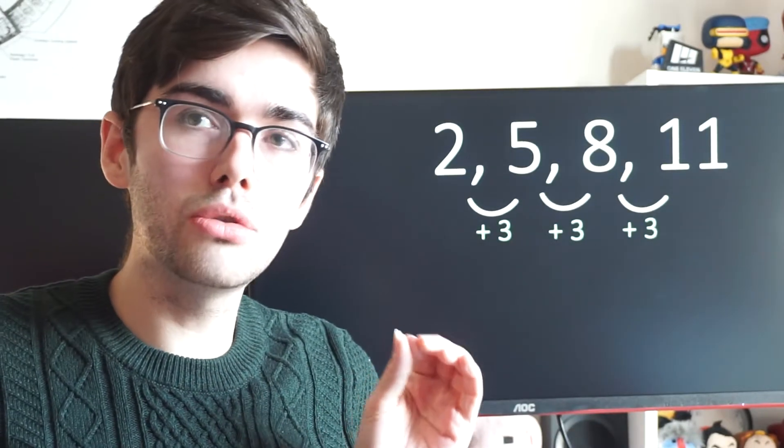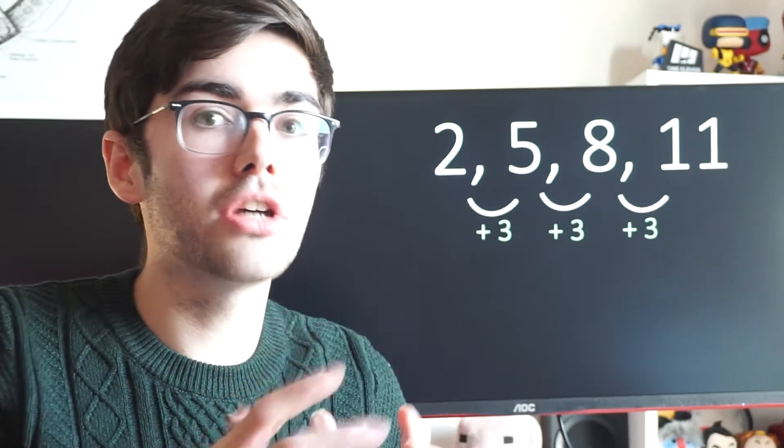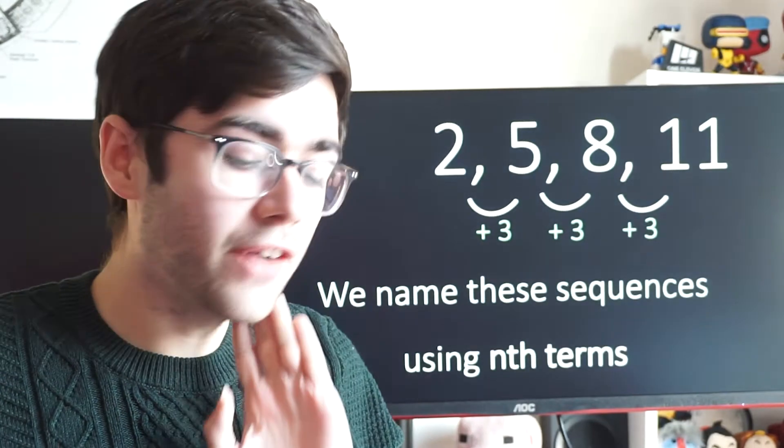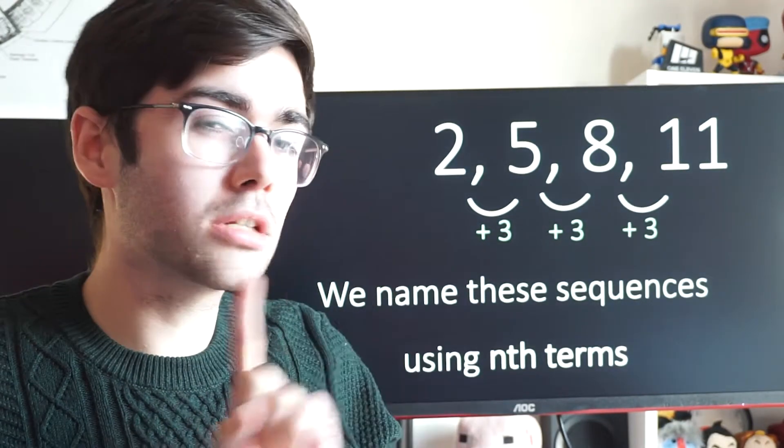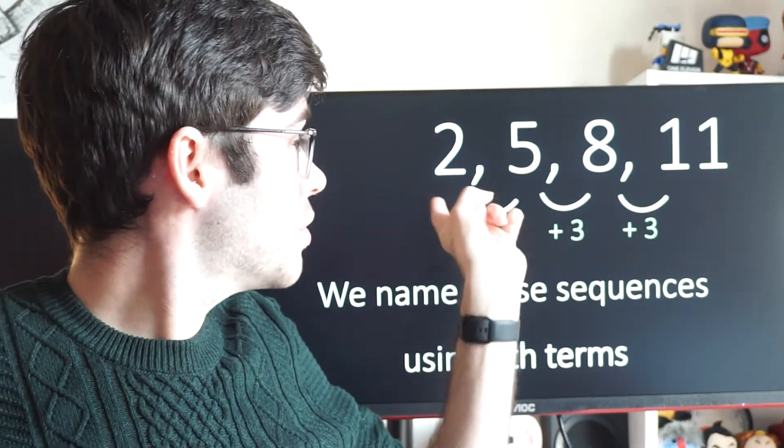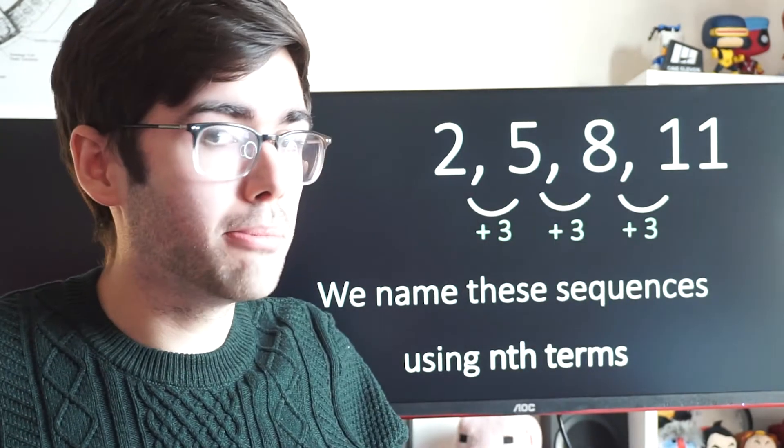We name these sequences using something called an nth term, and that's a little algebraic expression that we can use to generate other terms in that sequence. The way that we find an nth term is by looking at some details about the sequence. So this number that it goes up or down by each time, that goes in front of n.